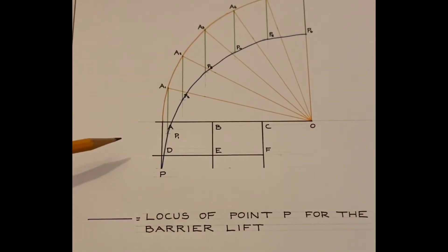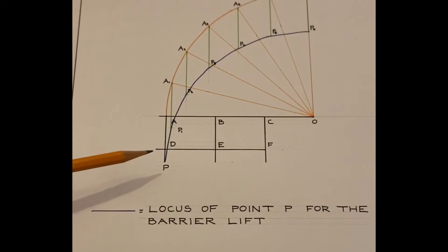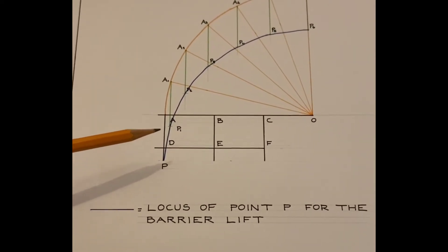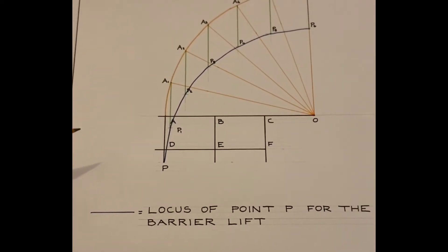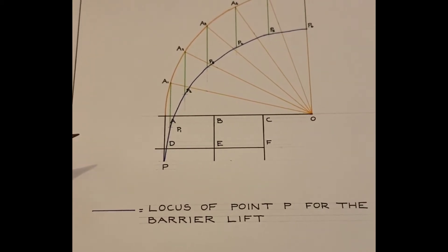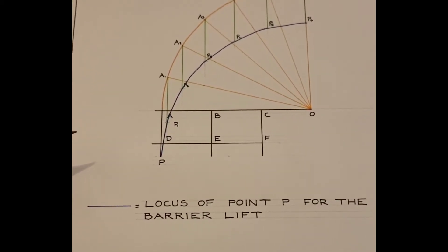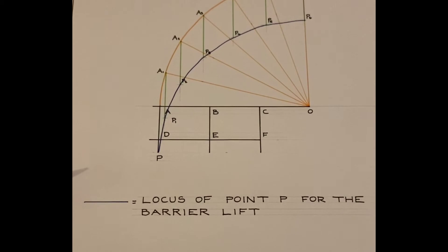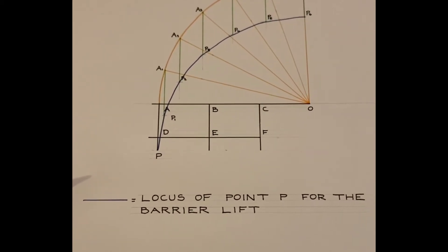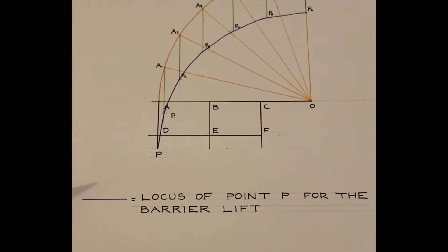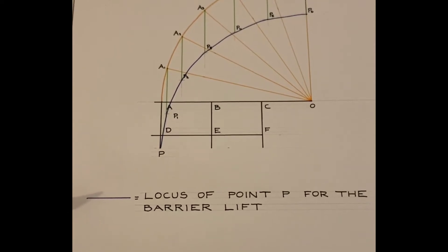So here is the completed solution for the first part of the question. We've connected all the P points together which gives us the locus of point P for that movement. The main thing to remember about this question is that only focus on the information that you have to deal with.